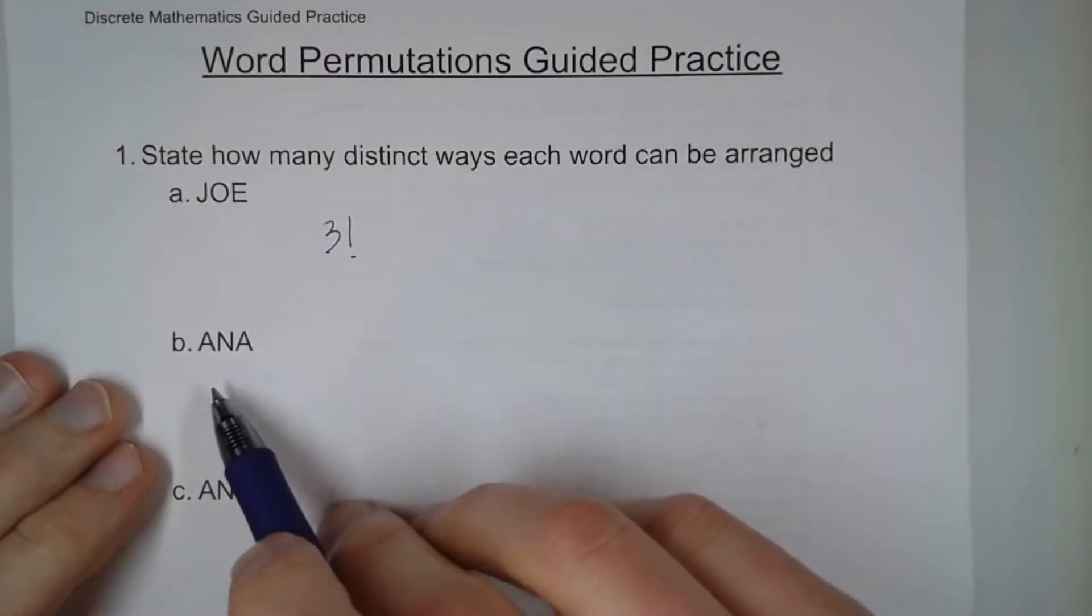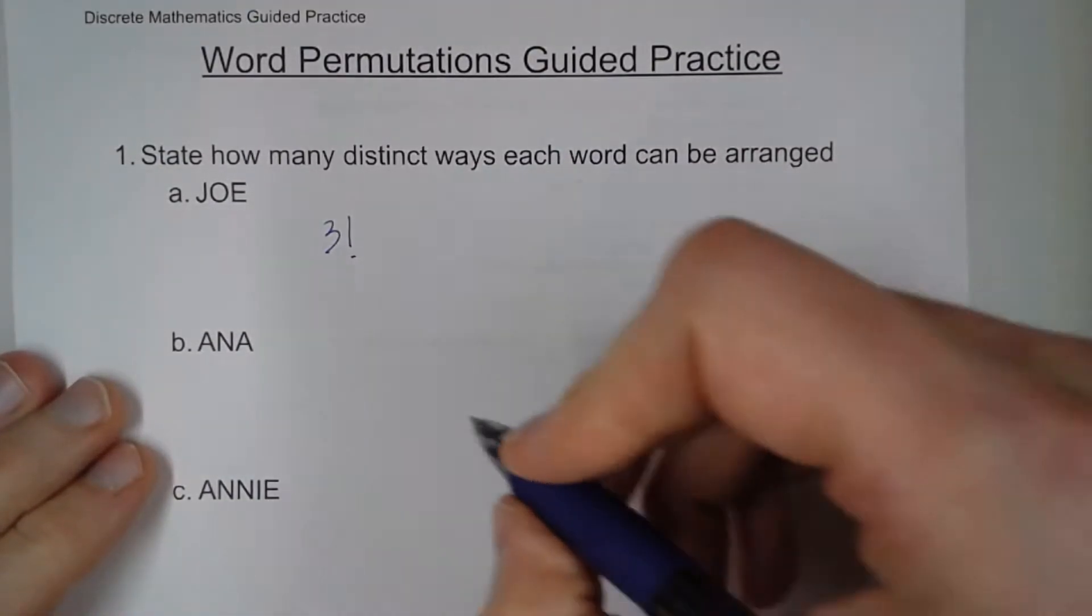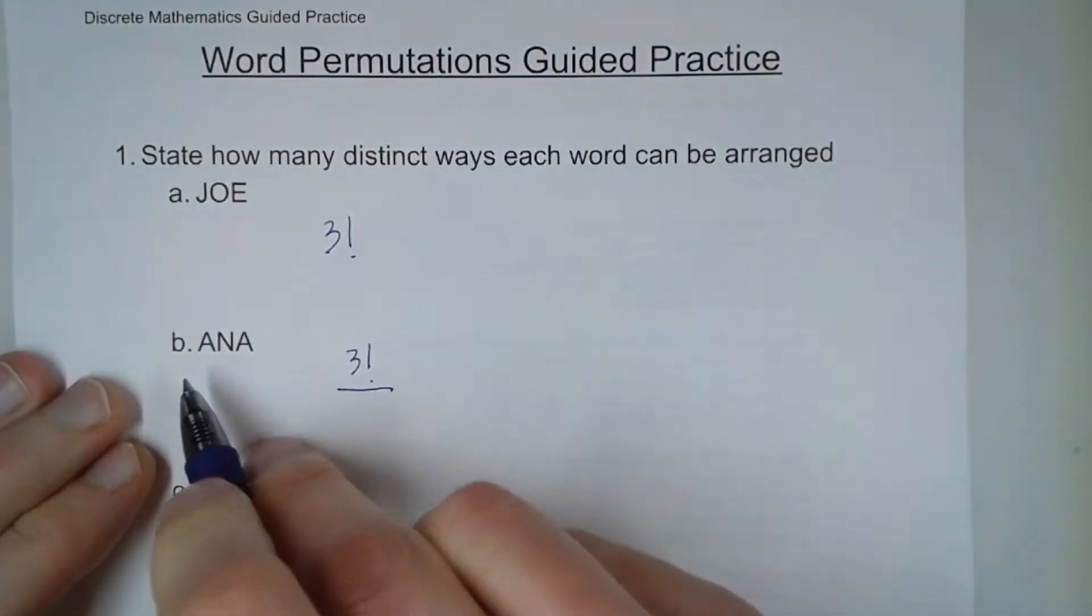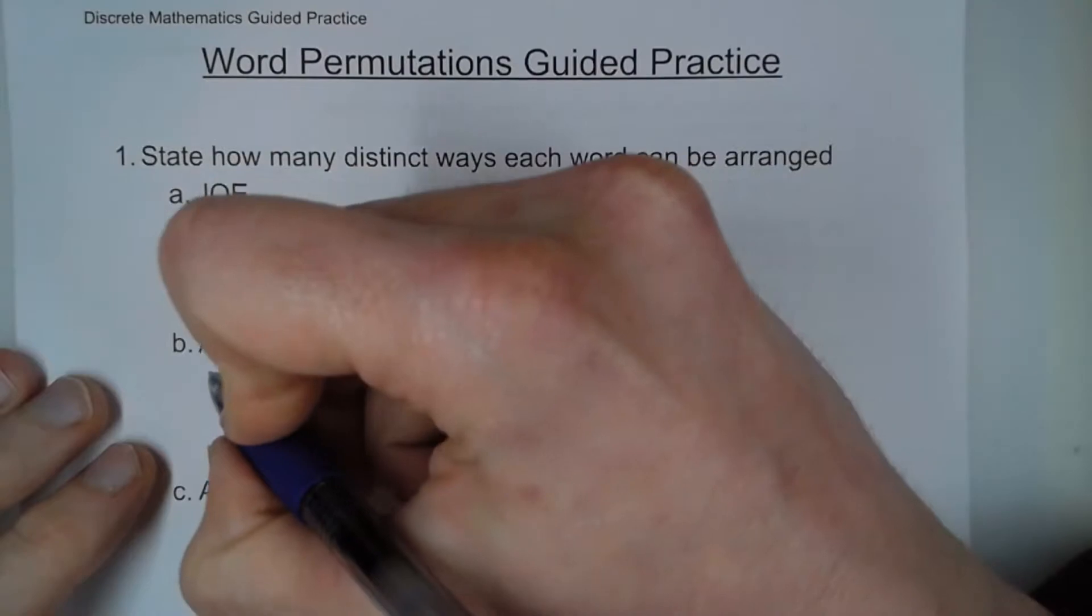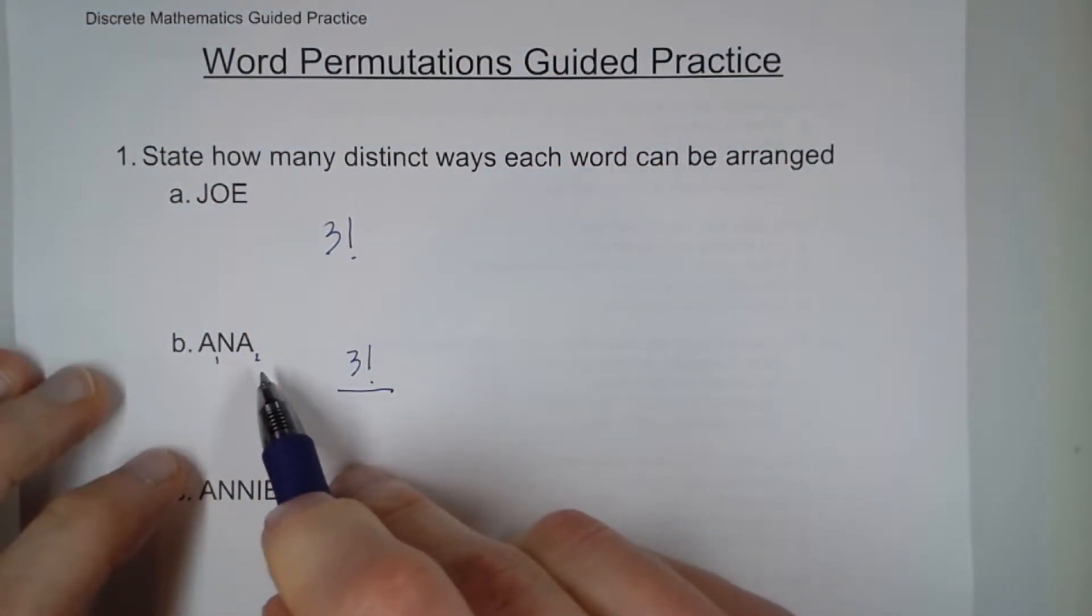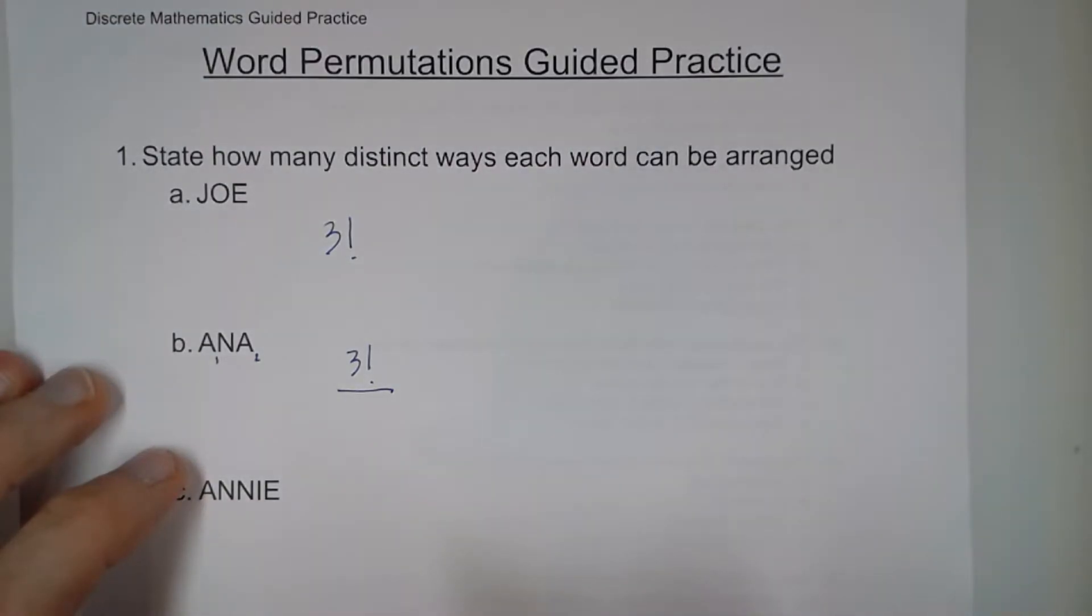But what about letter B, Anna, A-N-A? Well, there's three letters. However, the problem is the A's are interchangeable. That means we could think of this as A1 and A2, but if I switch them and put A2 and A1, that would still be considered the same thing.